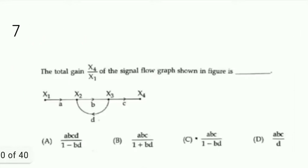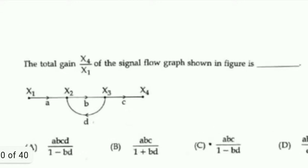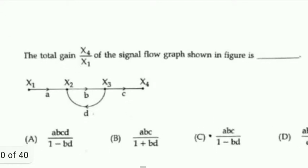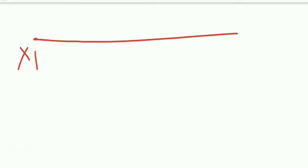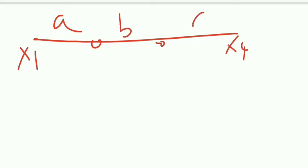The first question: find the total gain x4/x1 of the signal flow graph shown in the figure. They have given a signal flow graph with nodes x1 and x4. The branch gains are labeled a, b, c, and d.